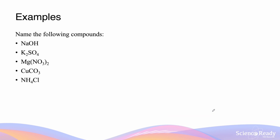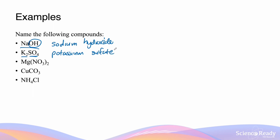Let's go through some examples of naming compounds which contain polyatomic ions. NaOH consists of sodium and the polyatomic ion hydroxide, so its name is simply sodium hydroxide. The second example has potassium and the polyatomic ion sulfate, so it's potassium sulfate. Remember that when naming ionic compounds, the cation always comes first and we do not use prefixes to denote the number or ratio of elements. MgNO3 — NO3 refers to nitrate — so this is called magnesium nitrate.